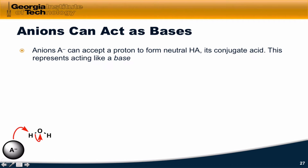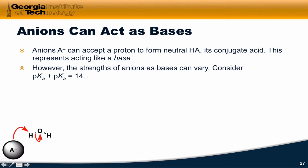We've seen before that anions can act as bases. The anion can accept a proton to form neutral HA, which is its conjugate acid, and in this way it's acting like a base — accepting a proton from an acid like water.